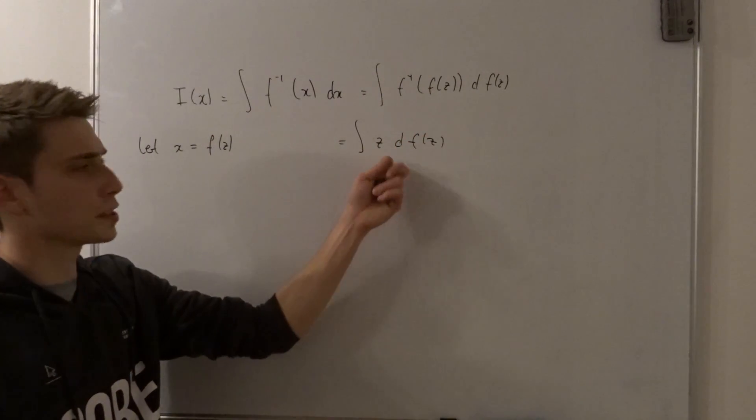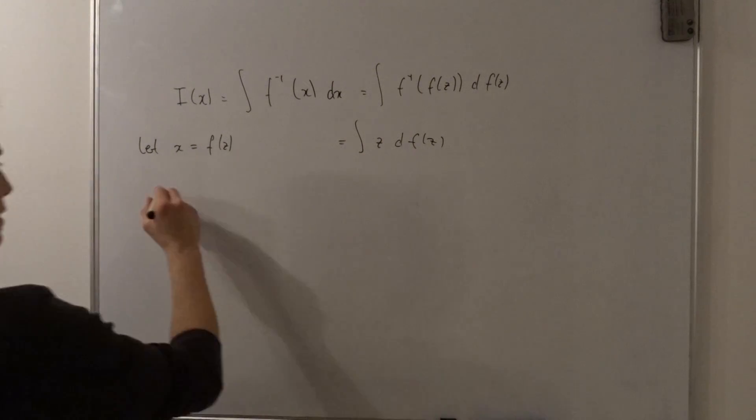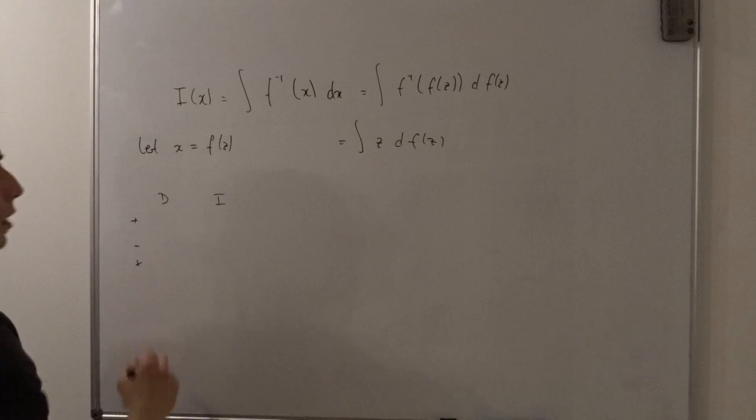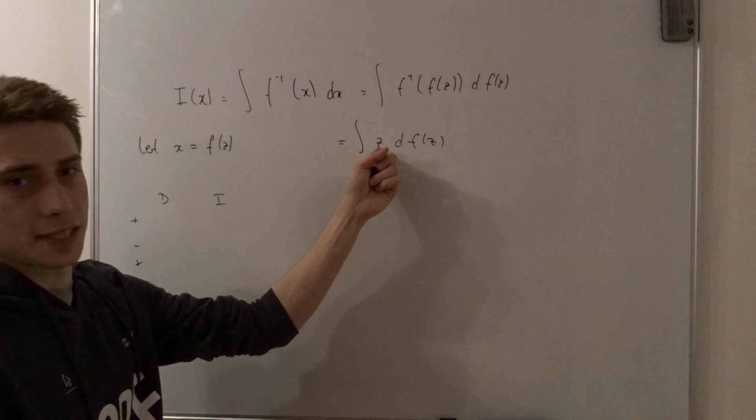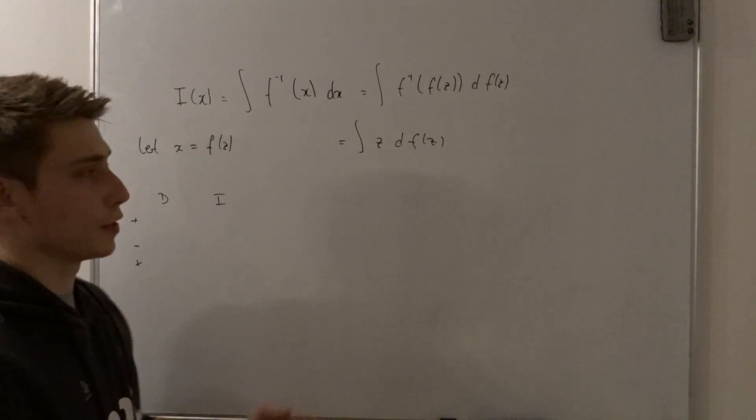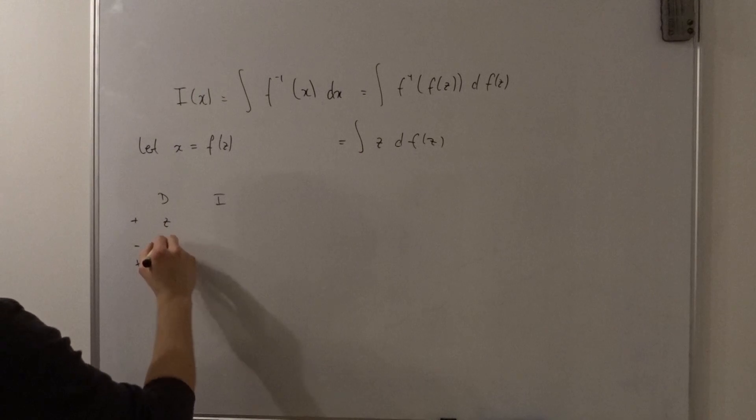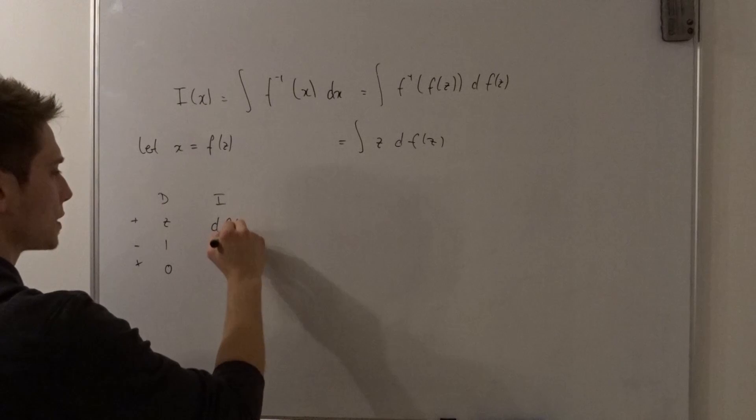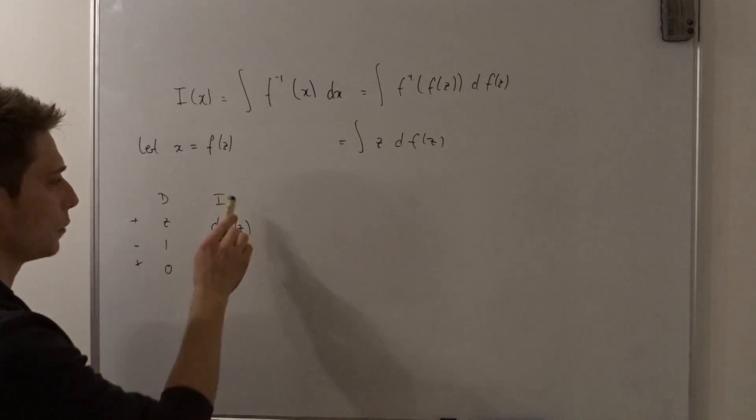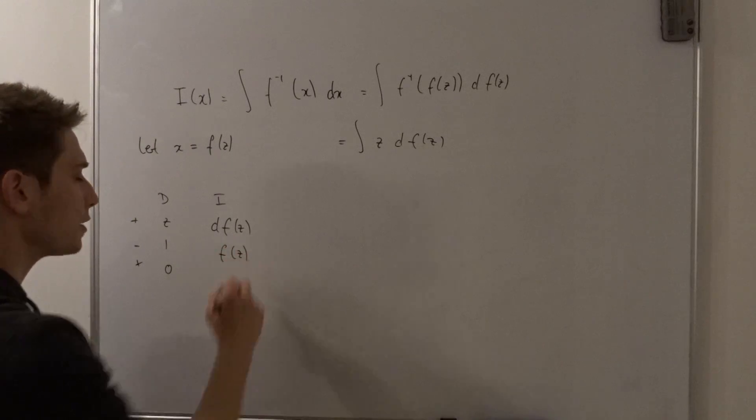And to solve this guy, we are just using integration by parts now. So we need something to differentiate and we need something to integrate. What should we differentiate? Well, z goes to zero way faster than df(z), so we are going to differentiate the z. So this becomes 1 and then 0. If we are going to integrate df(z), well, if we integrate a differential, it just becomes the function itself. So that's f(z).